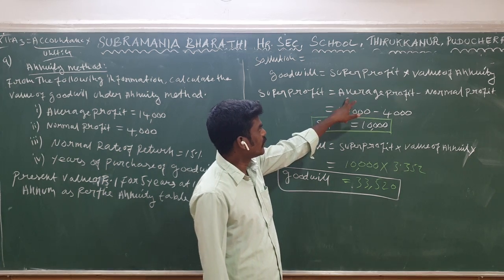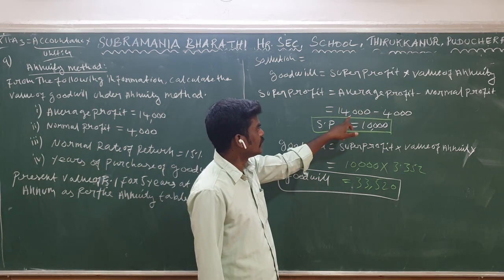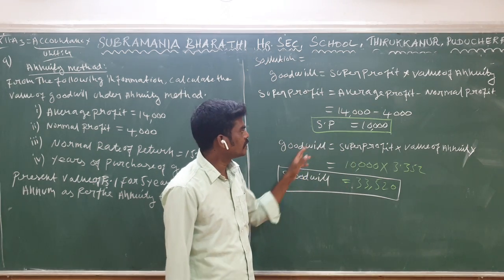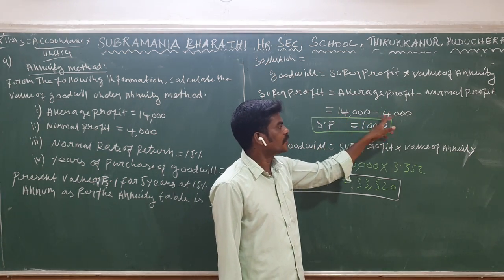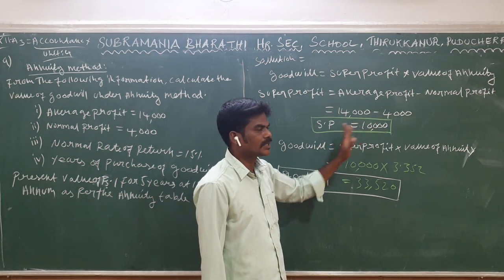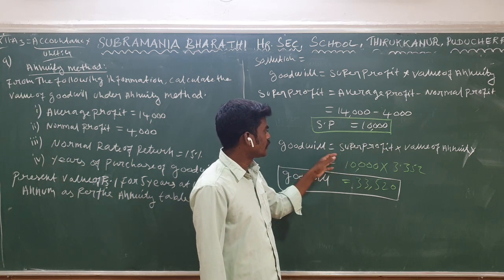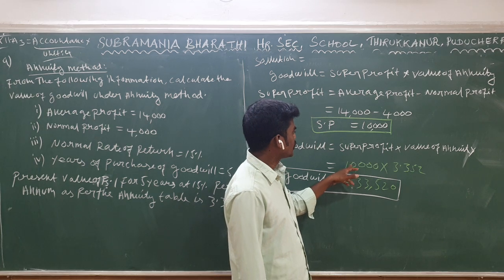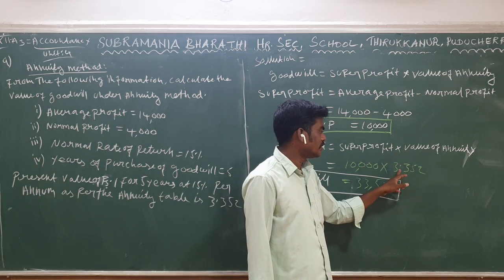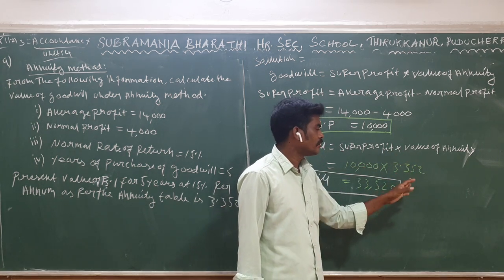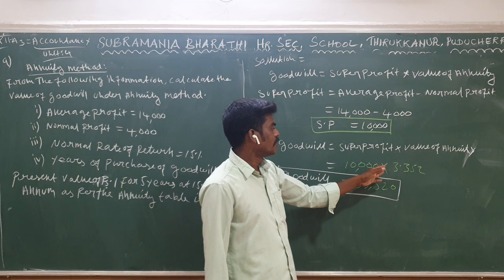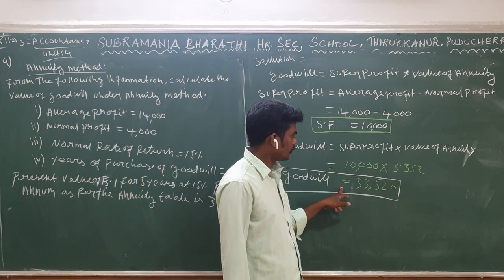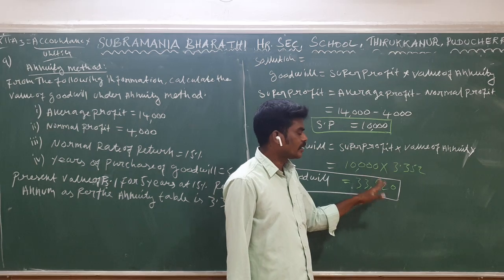Now, for example: average profit is $14,000 and normal profit is $4,000. So, 14,000 minus 4,000 equals super profit of $10,000. Goodwill equals super profit $10,000 multiplied by value of annuity 3.352. Therefore, goodwill is equal to $33,520.